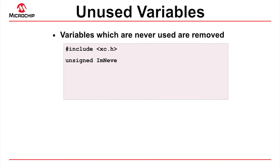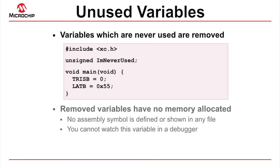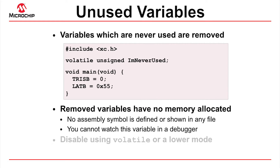This first optimization removes variables that are never used. In this code example, the compiler would remove the aptly named C variable 'I'm never used', so that it has no memory allocated. Its assembly symbol will not appear in the list or map files, and no debug information will be associated with it. You would not be able to watch this variable when running or simulating the code. Global variables marked as volatile will not be removed. No unused objects are removed in the standard or free compiler operating mode.